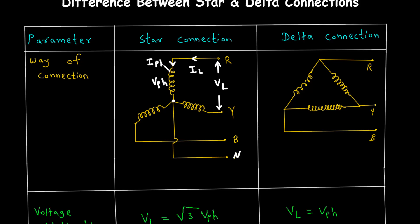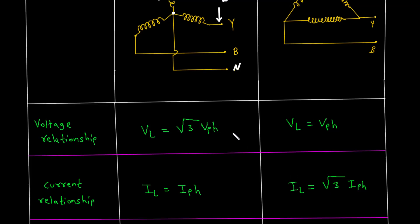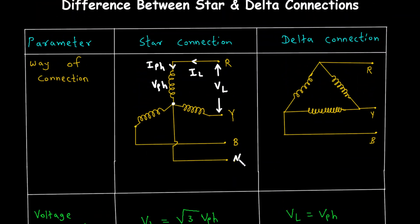An important feature of the star connection is the neutral point. This point can be connected to the ground for safety and stability. It provides a return path for unbalanced currents. This is particularly useful in power distribution networks, where having a neutral point helps manage loads that aren't perfectly balanced.